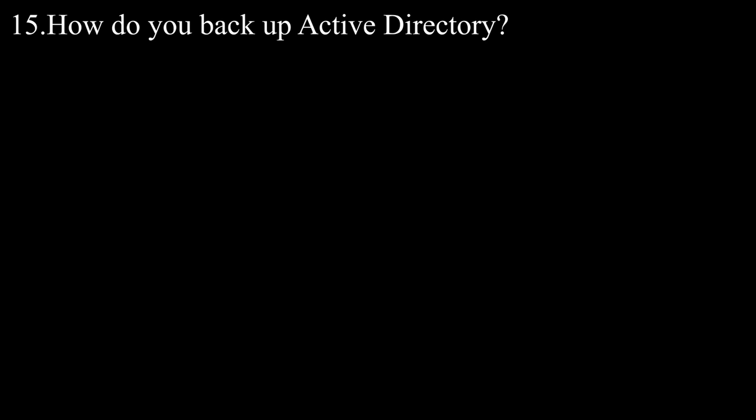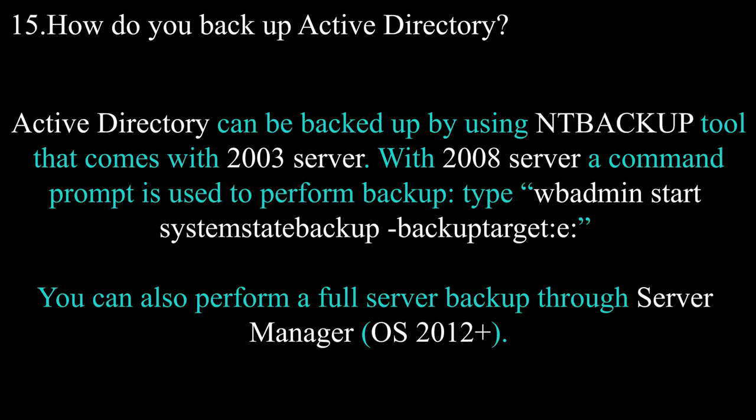Question number fifteen: how do you backup Active Directory? Active Directory can be backed up using the NT Backup tool that comes with 2003 server. With 2008 server, a command prompt is used to perform backup. You would type: wbadmin start systemstatebackup -backuptarget:E:. You can also perform a full server backup through server manager.